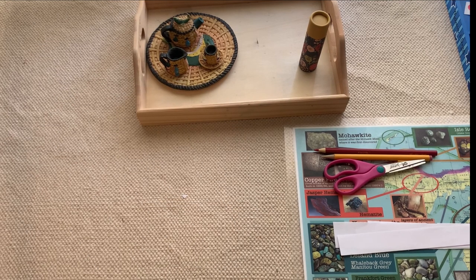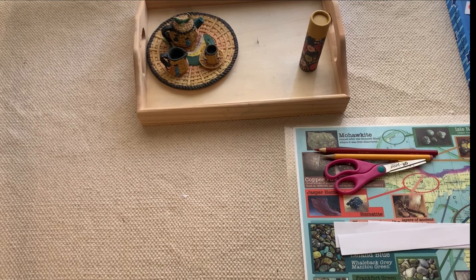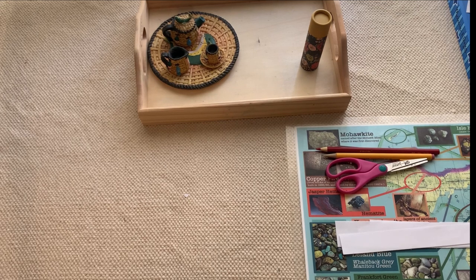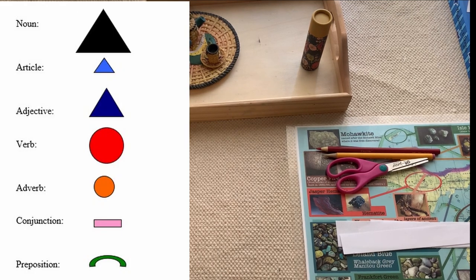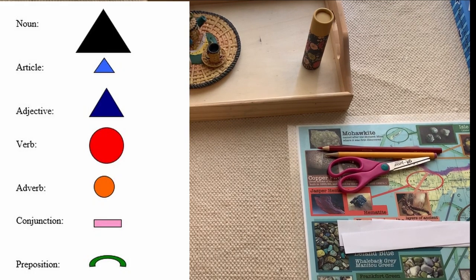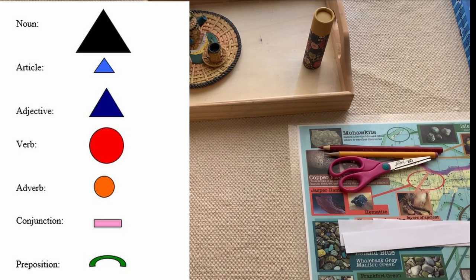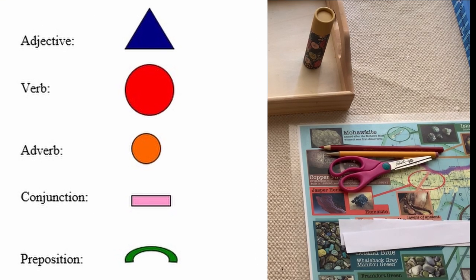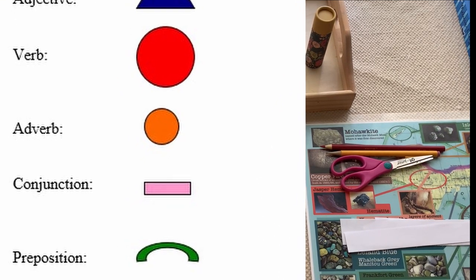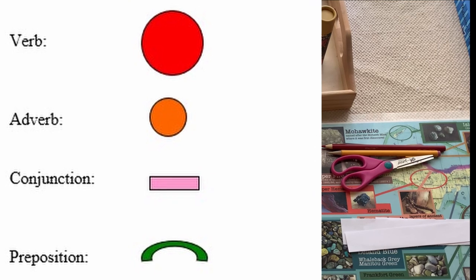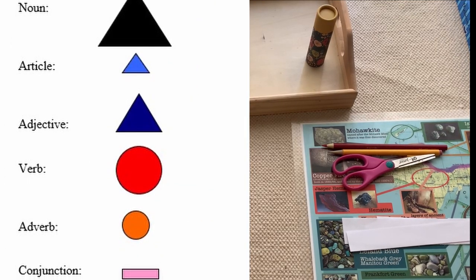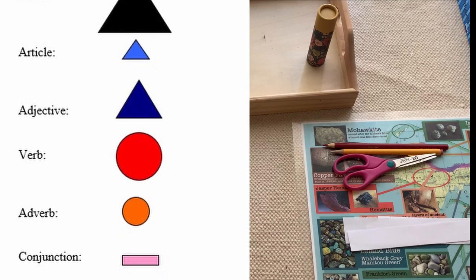Hey everyone, this is Teresa from Base 10 Montessori. Today I'm going to give you an example of a grammar lesson in the AMI Montessori classroom. This lesson is going to be on the preposition. To get to the preposition in the Montessori classroom, we've already gone through the article, the noun, the adjective, and the conjunction.